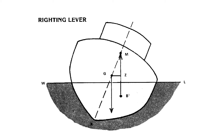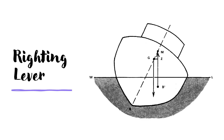The distance from the center of gravity to the vertical line drawn upward from B1 to the metacenter is called the righting lever, referred to as GZ. The popular formula is GZ = GM × sin θ, where θ is the angle of heel. Therefore, the force involved in returning the vessel to the upright position is the weight of the vessel acting downward through the center of gravity, multiplied by the righting lever GZ — this is referred to as the moment of statical stability.